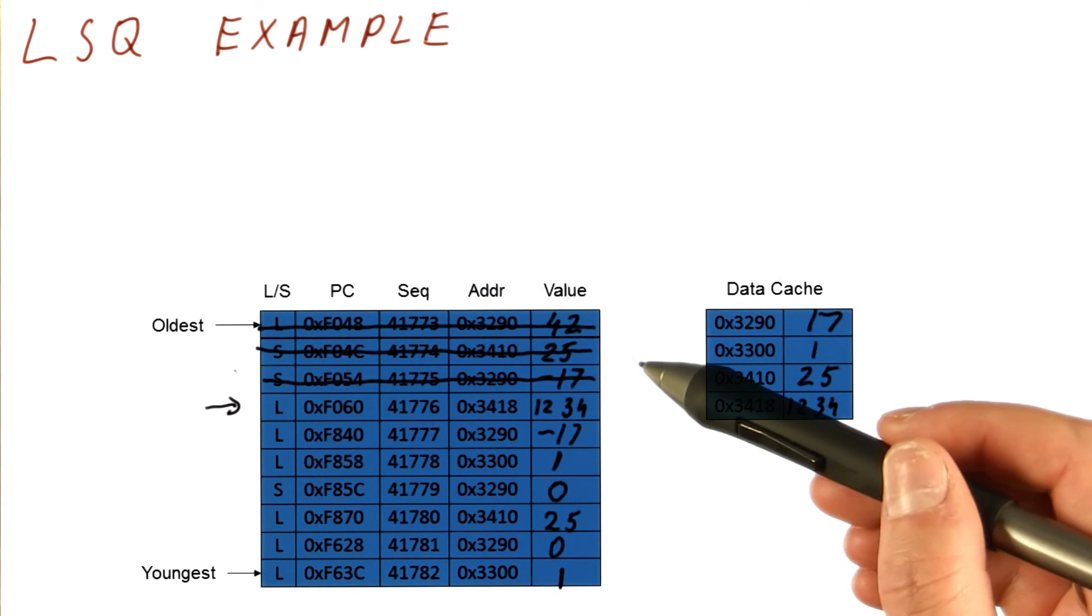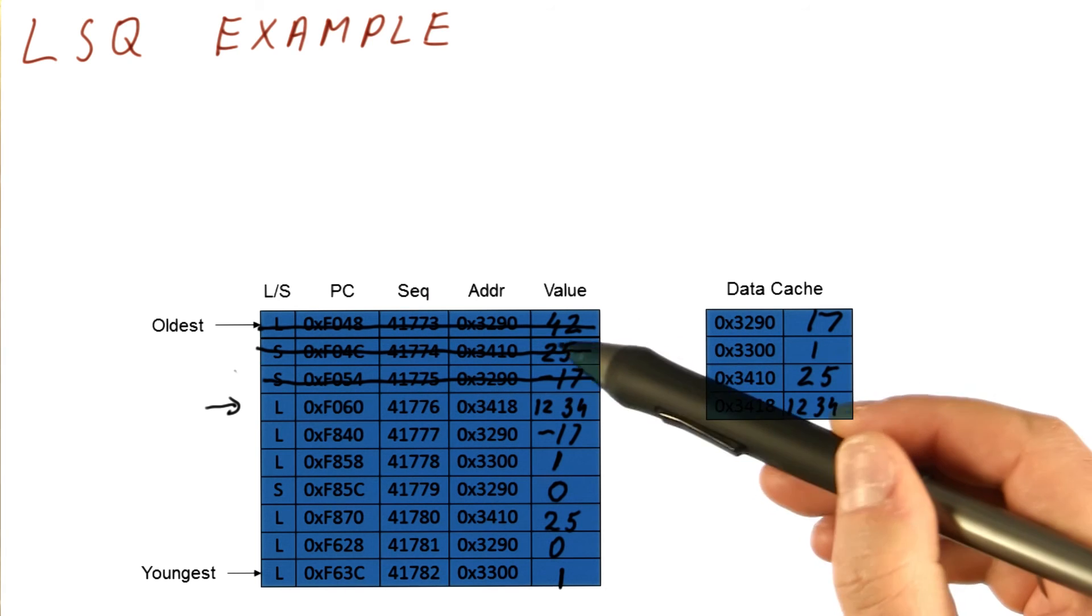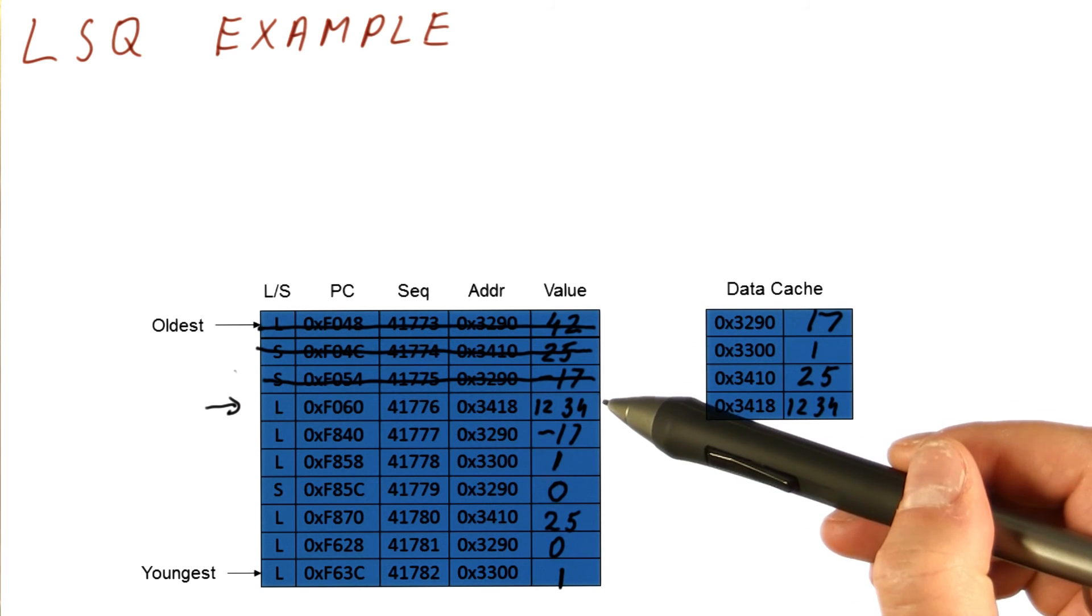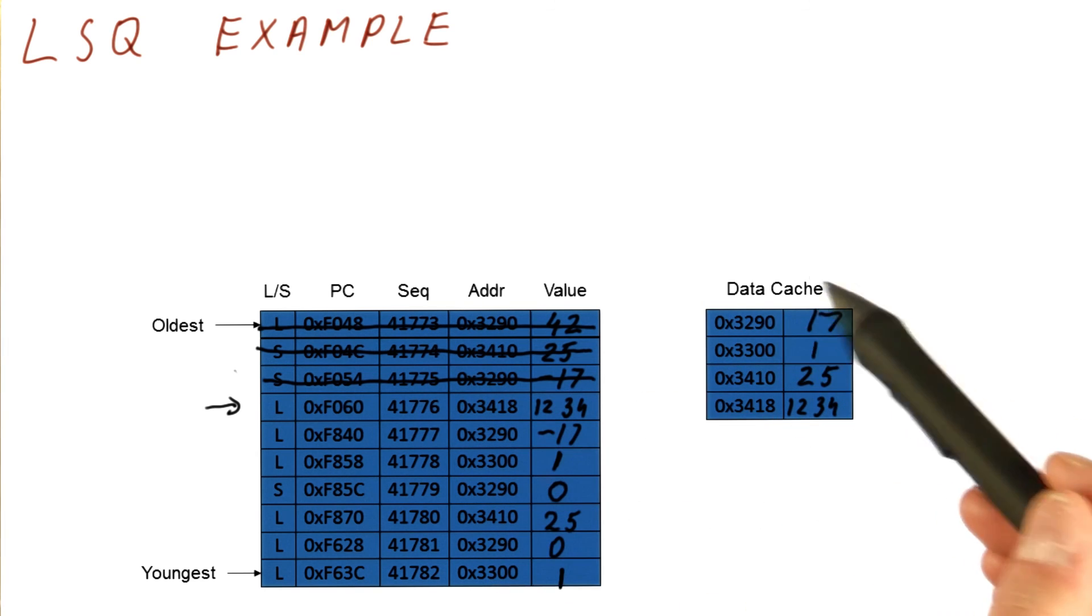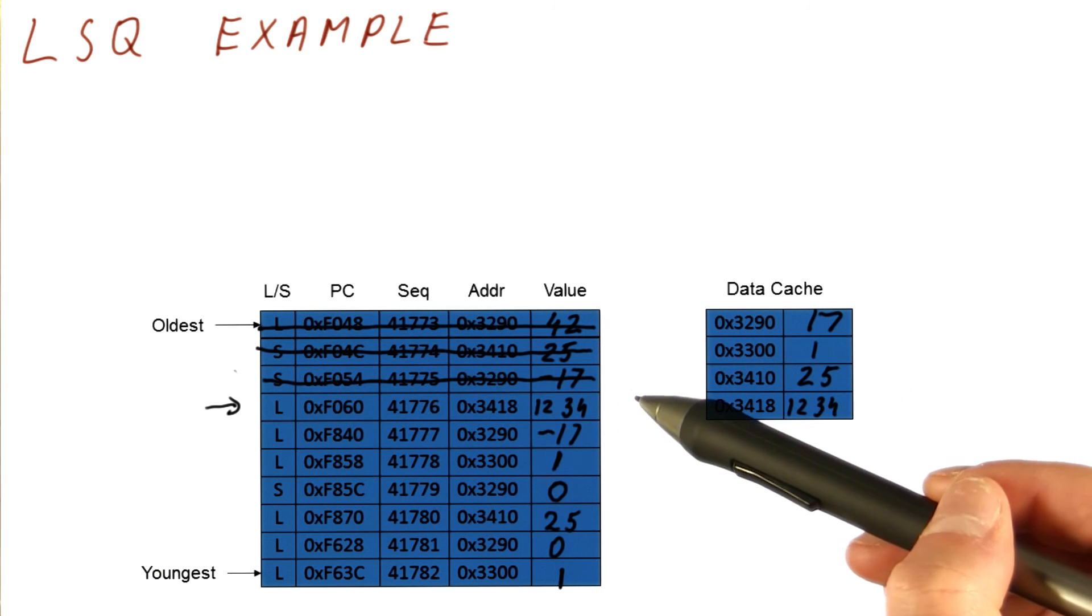If you remember, we said that we need to send the values to the memory or the data cache at the time the store commits, not at the time it executes. Here's why. If at this point we decide that we are taking an exception, we can just flush this from the load store queue, and the value in the data cache and memory is exactly the value that should be there as of this point in the program execution.